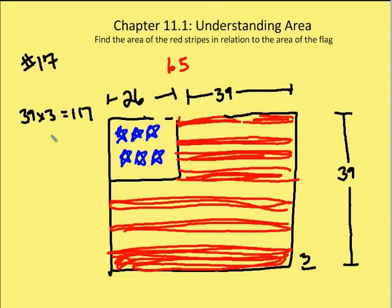Now we have 4 of those, so we have to multiply 117 times 4, and we get 468 units squared as the area of the red stripes on the top.